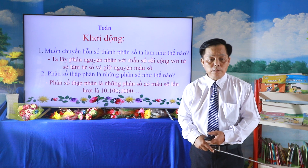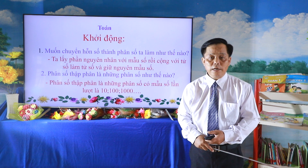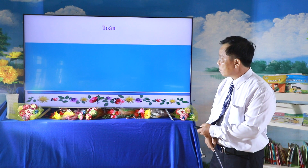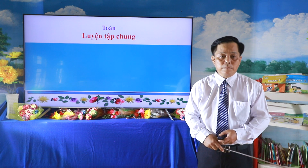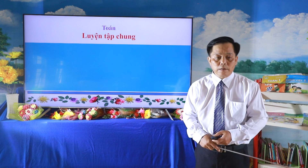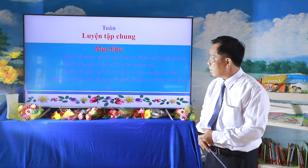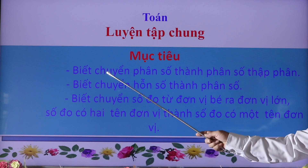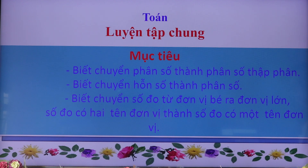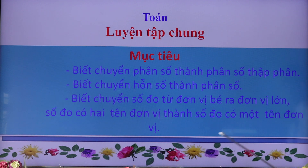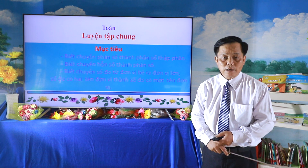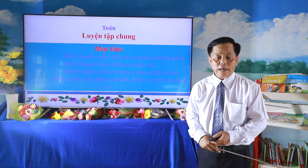Để chúng ta tiếp tục qua tiết học mới, các em đã học về phân số thập phân và hỗn số. Hôm nay chúng ta ôn tập về phân số thập phân, hỗn số, và đổi đơn vị lớn ra đơn vị bé của các đơn vị đo. Chúng ta vào tiết luyện tập chung. Mục tiêu: biết chuyển phân số thành phân số thập phân, biết chuyển hỗn số thành phân số, biết chuyển số đo từ đơn vị bé ra đơn vị lớn, số đo có 2 tên đơn vị thành số đo có 1 tên đơn vị.